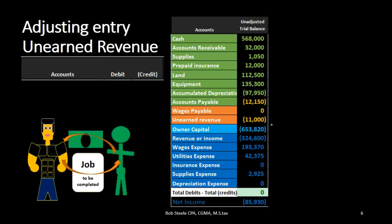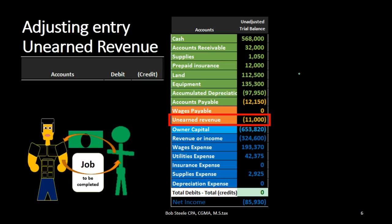So if we look at our trial balance looking for an account related to unearned revenue, we see here unearned revenue. So we know that that's going to be part of our journal entry. We have unearned revenue. What's going to be the other account? We know that there's also going to be an account below the owner's capital on the income statement. So if we look at the trial balance,